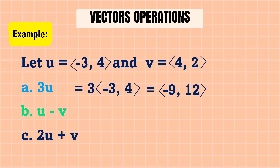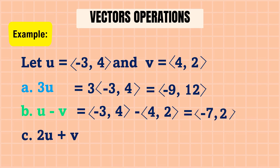Next, we solve u − v: (−3, 4) − (4, 2). Subtracting: −3 − 4 = −7, and 4 − 2 = 2. The answer is (−7, 2).